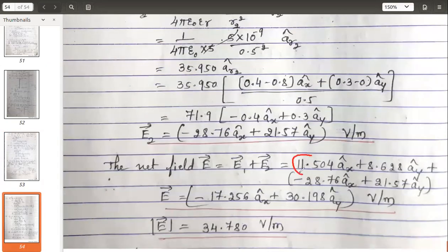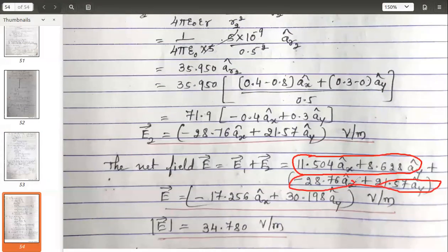The net field is addition of two fields, one and two. See, âₓ coefficient: one is positive, one is negative, so subtract them. You will get something minus 17. And second, the ây coefficients are positive, add them, you will get 30. This is the vector.